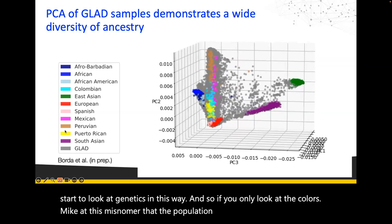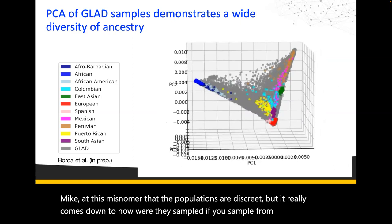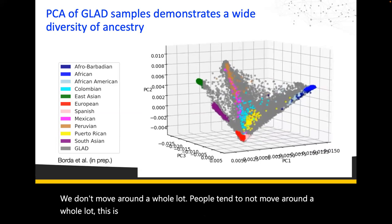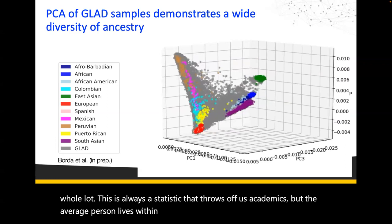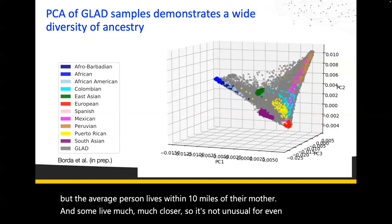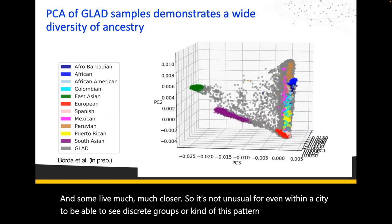If you sample from discrete points you get discrete representation, but GLAD tried to take anyone self-described as Latino or from Latin America, and what we see in the gray dots is that everybody is kind of everywhere — there's a continuous amount of variation and ancestry. Saying that Latin Americans are a single group just doesn't work when you look at genetics this way. The average person lives within 10 miles of their mother, so it's not unusual to see subtle geographic structure even within a city.